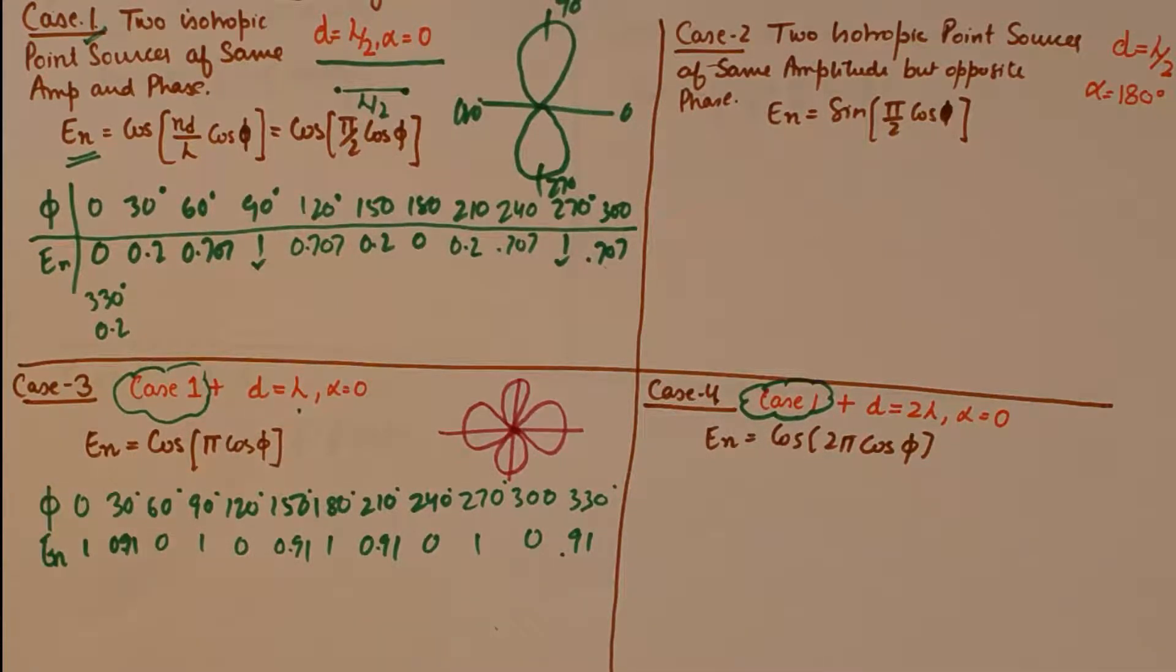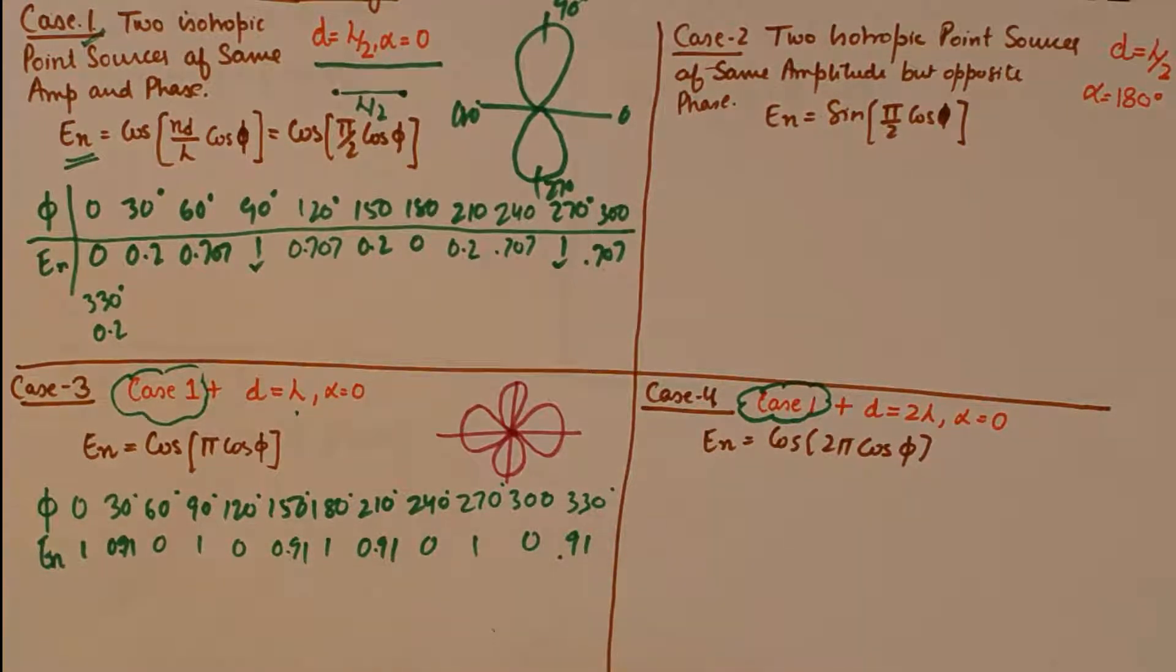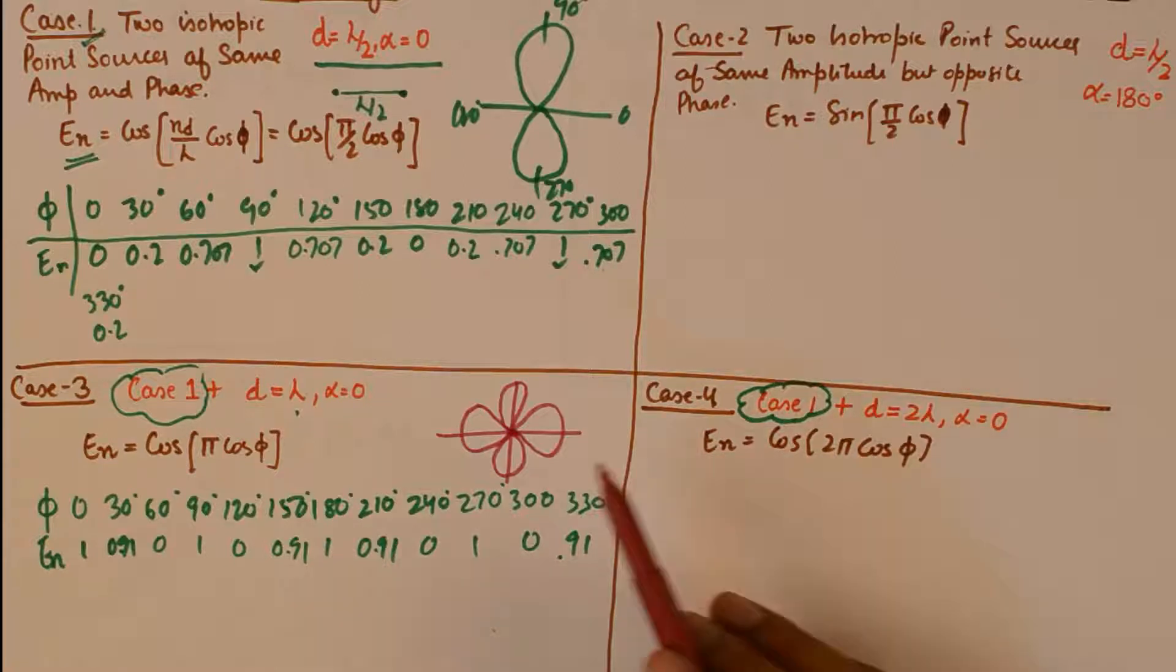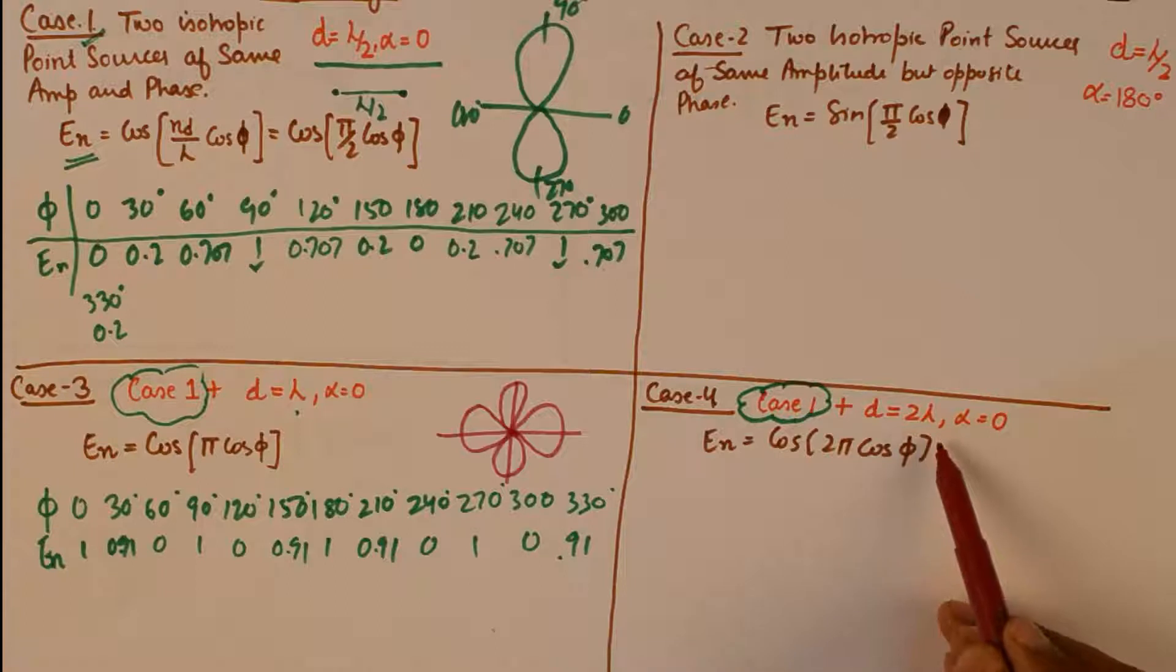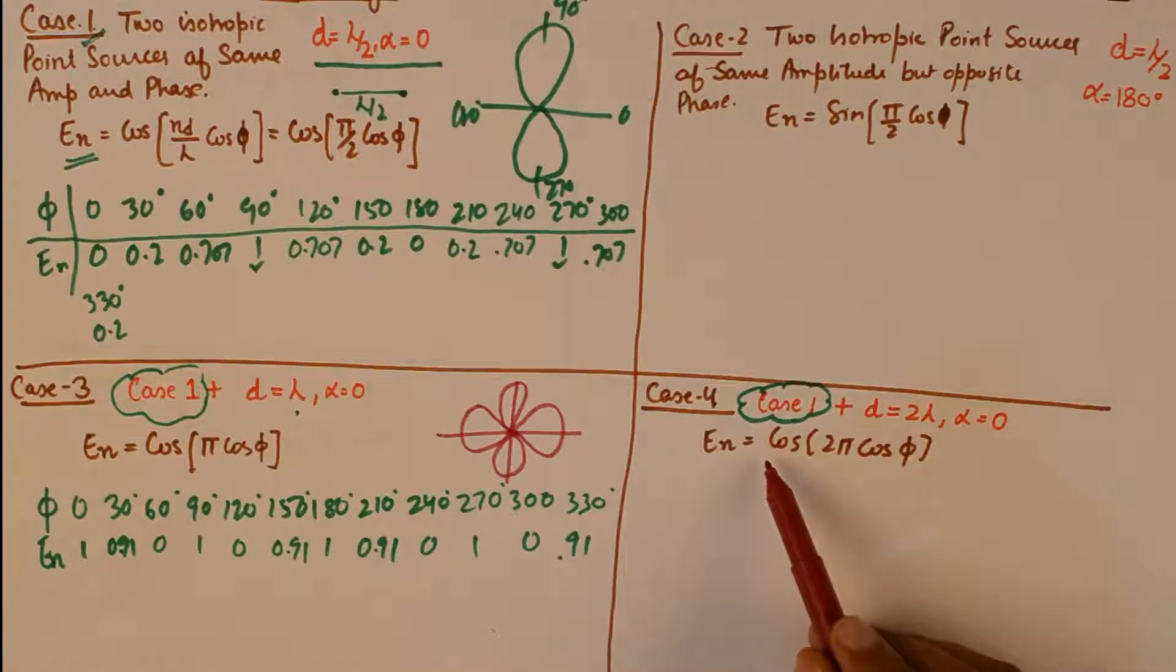Similarly, case 4 is similar to case 1 in terms of configuration, but the only difference is the distance has changed from lambda by 2 to 2 lambda. And the normalized field equation has also changed itself.